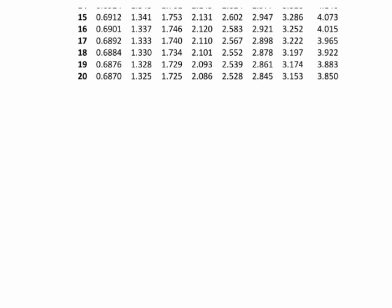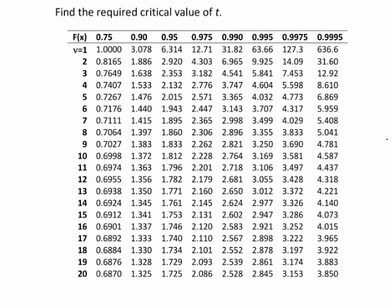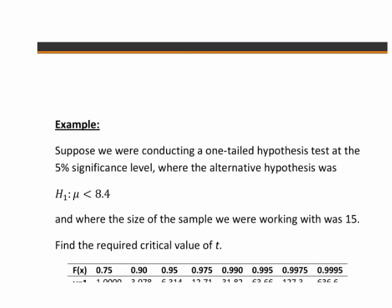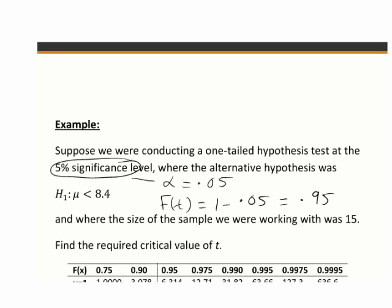And again here we just show part of the table. Now the first step when we look at it is to find F of T, which sometimes as in this table will be referred to as F of X. And we said that that was equal to 1 minus the significance level alpha. So let's look at our information again here. We're told to test at the 5% significance level, so alpha equals 0.05. Therefore right away we can see that F of T is 1 minus 0.05, which is going to give us 0.95. So right away then we know that this will be the column that we're going to be looking at.